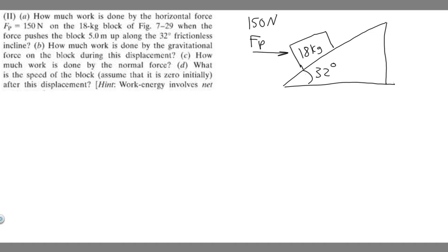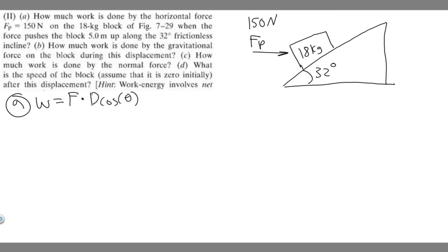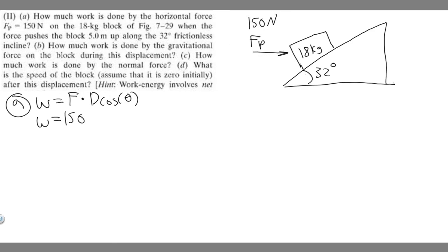Let's go ahead and start with A: the work done by the horizontal force on this block as it pushes up five meters. The formula for work is equal to force times distance times the cosine of the angle, which is the angle between the direction it's going and the force. So our force is going to be 150 newtons, times the distance of five meters.